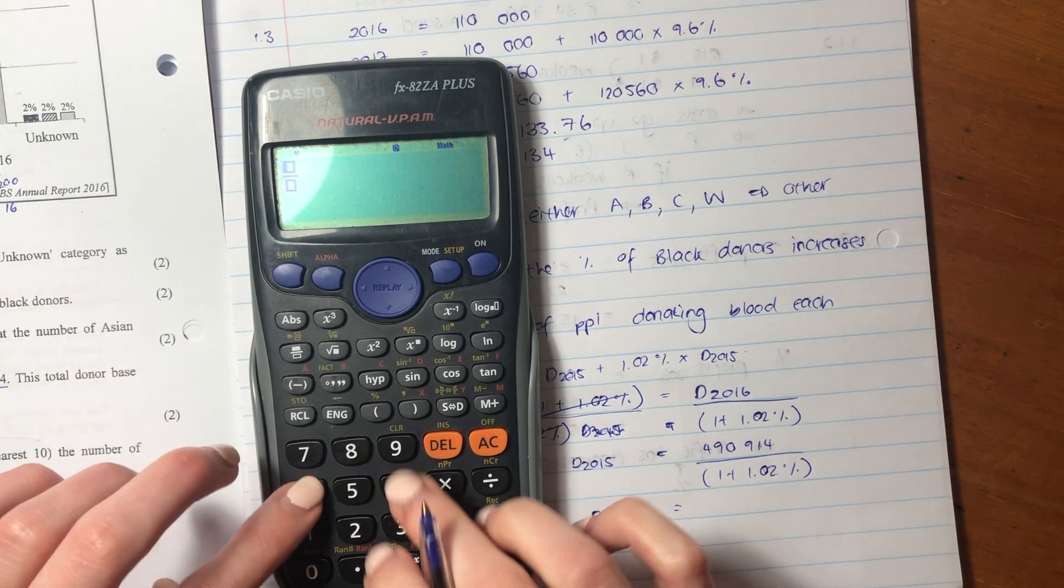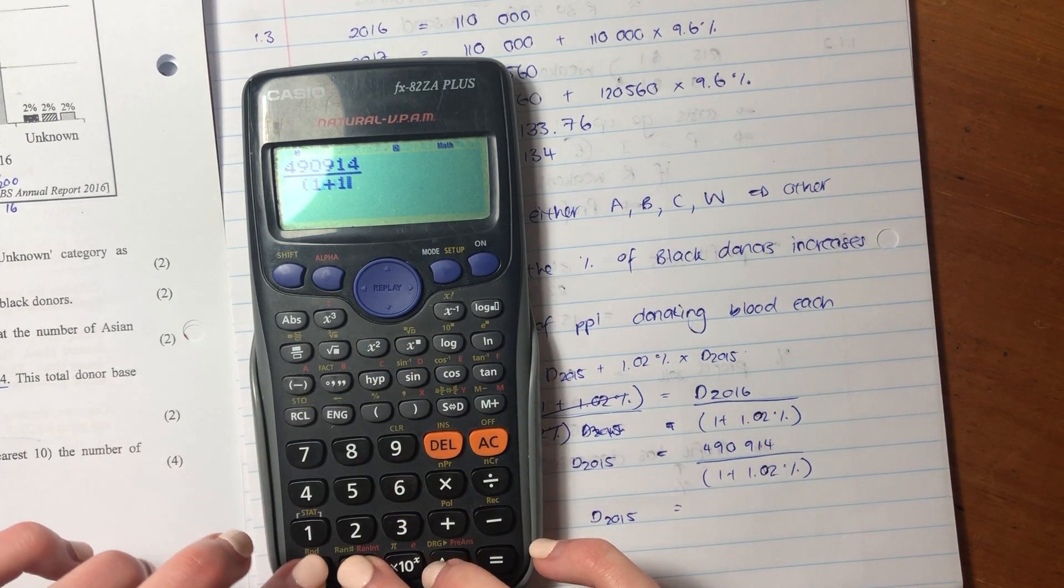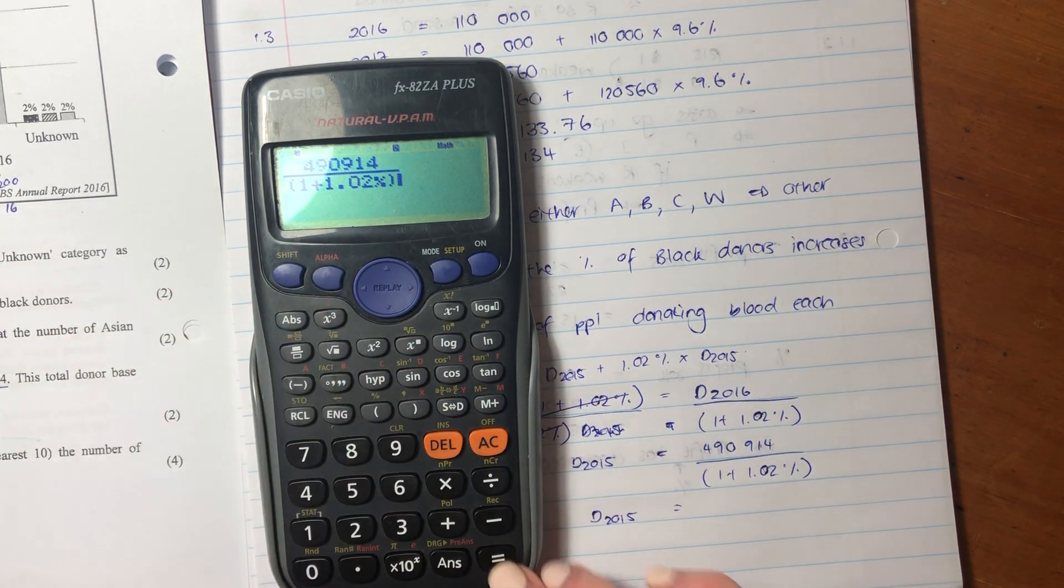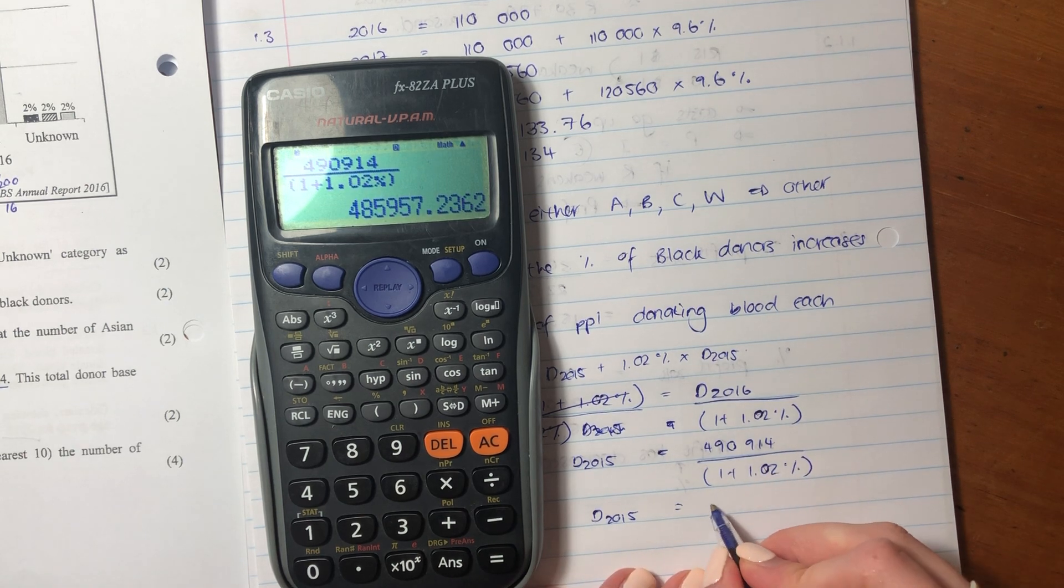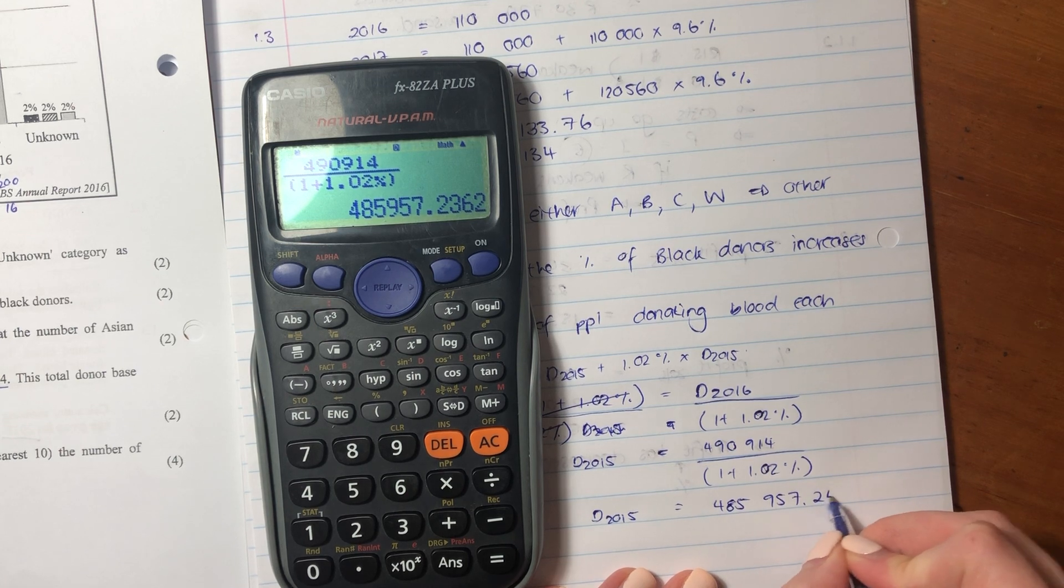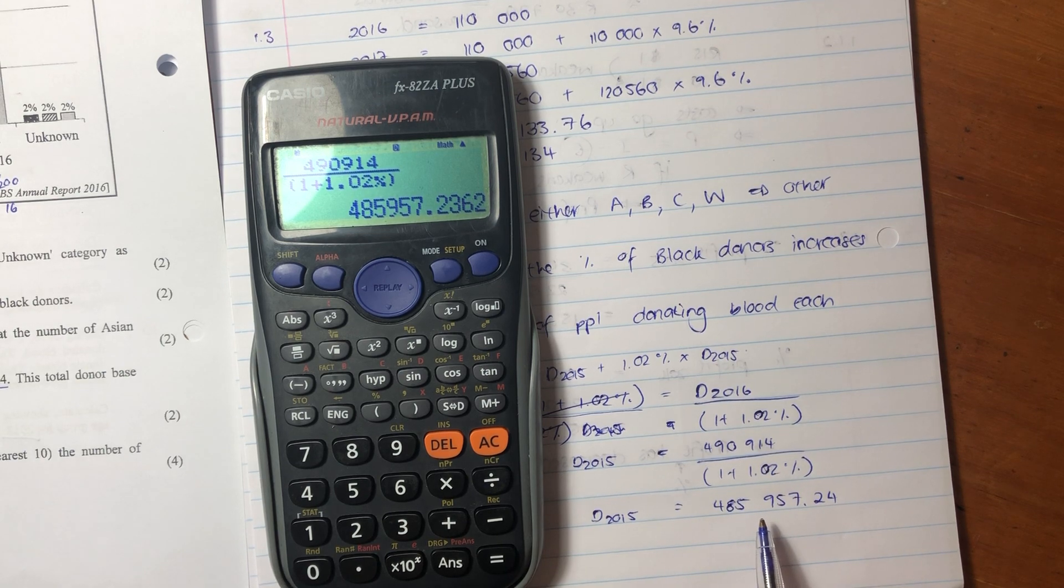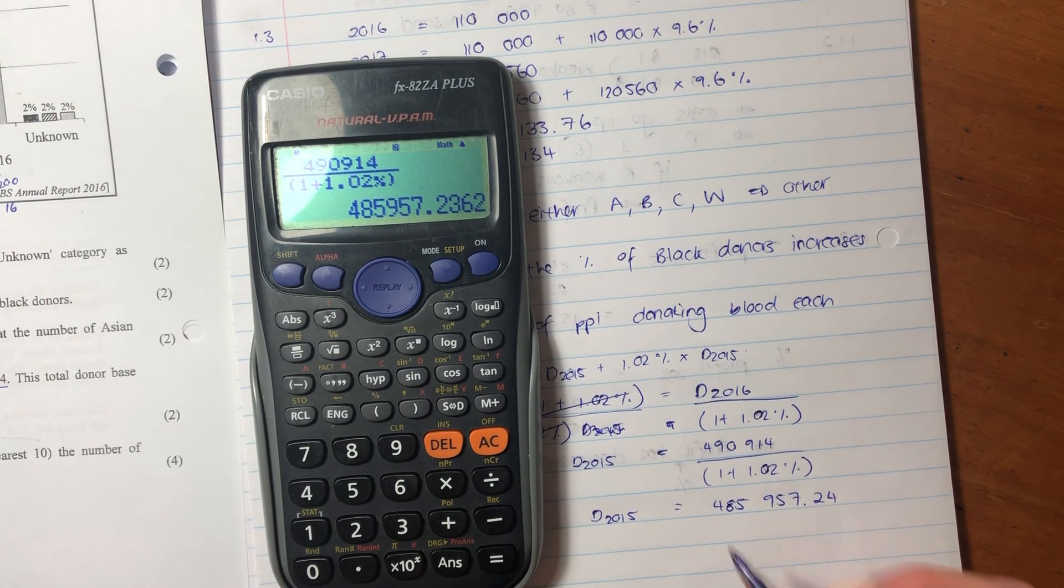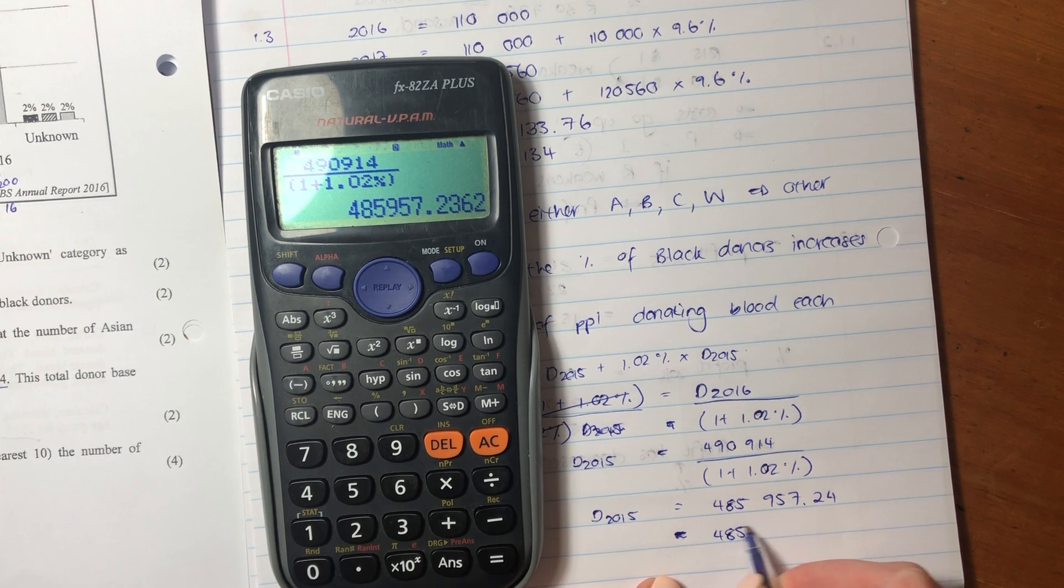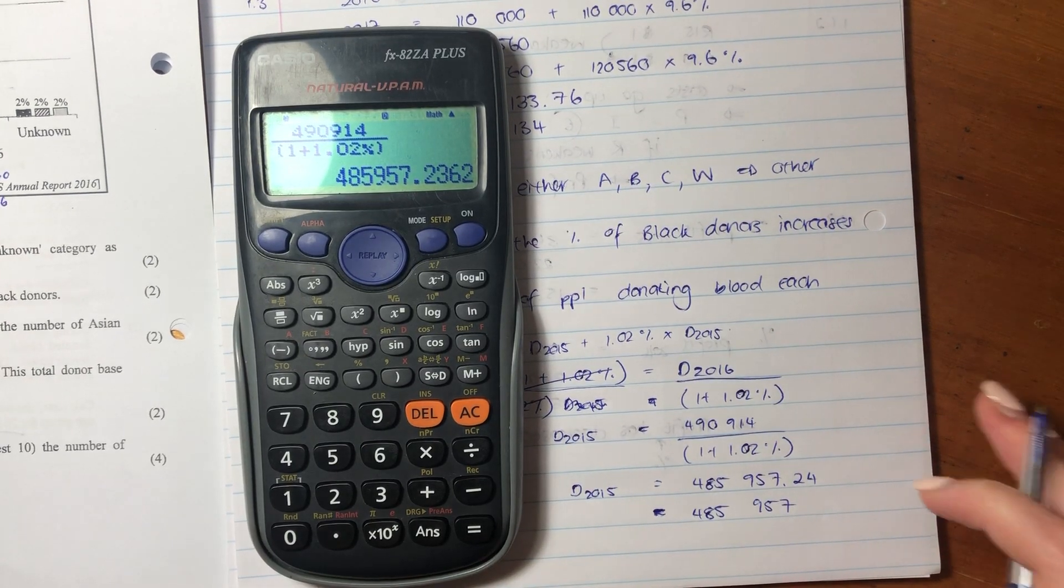This actually cancels this, so we'll be left with our donors for 2015. And then I'm going to sub in my value here for what my donors in 2016 were, and I'm going to divide it by this percentage here. Let's put this into our calculator. 490,941 divided by 1 plus 1.02%. And our number of donors in 2015 is this amount here. Now you can't have part people. So let's just say if we round this off, you can round this off to 485,957.